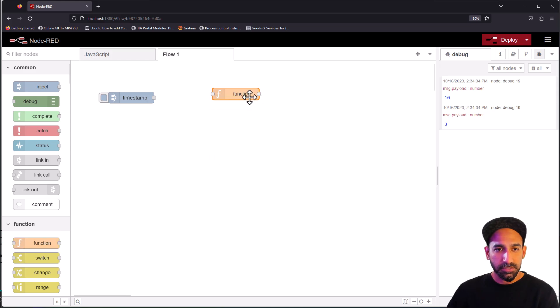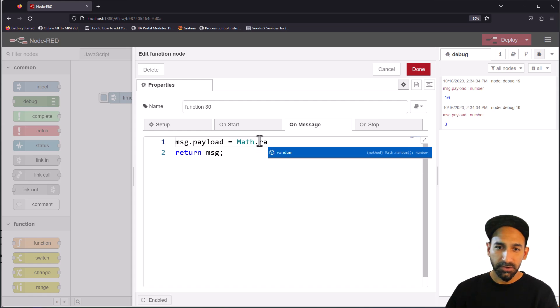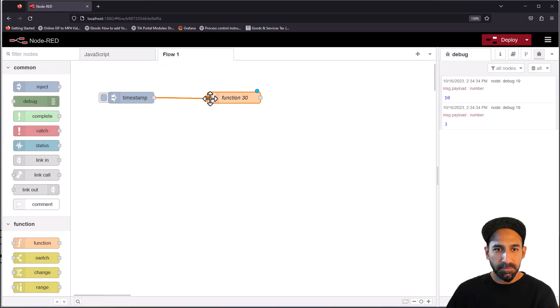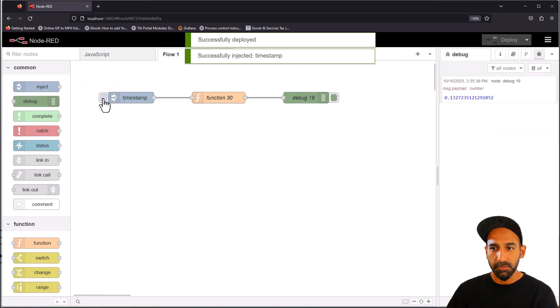Let's try that. Take a function node and type msg.payload equals Math.random. You can see while you're typing, JavaScript is telling you the complete function, you can just click on that, makes it easy, semicolon. By default, Math.random is going to give you a number between zero and one.